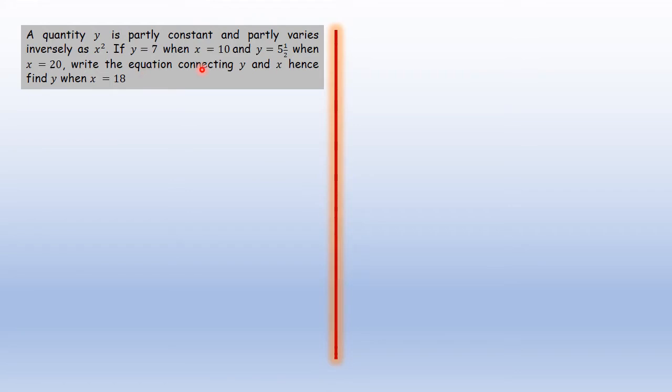We're told a quantity y is partly constant and partly varies inversely as x squared. When y = 7, x = 10, and when y = 5.5, x = 20. Write the equation connecting y and x, and hence find y when x = 18.